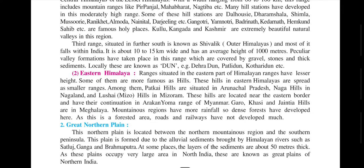The third range, the Outer Himalayas — also known as the Shivaliks — has a width of 10 to 15 km and an average height of 1000 meters. This range is formed of gravels, stones, and thick sediment, all included in structures called Duns. Local city names reflect this, such as Dehradun.